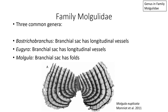Branchial sac folds, however, run in the same vertical direction — from anterior to posterior in the branchial sac — but branchial folds are tissue that extends above the surface of the flat plane when you lay the animal down. If you see branchial folds, then you have genus Mogula. If you see longitudinal vessels instead, you have Bostrichobranchus or Eugyra. This photograph shows a Mogula — so these are branchial folds.